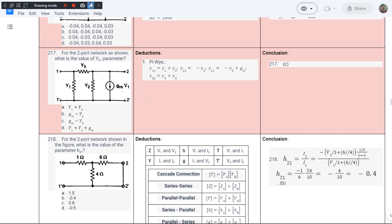This is question number 217 from chapter 1 of J.P. Gupta's book. The question goes like this: for the two port network as shown, what is the value of Y21 parameter?